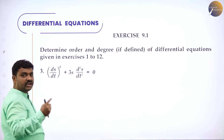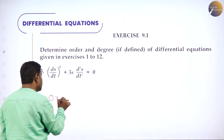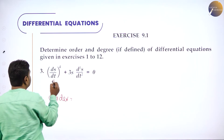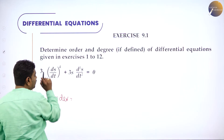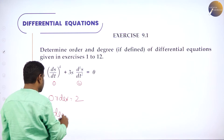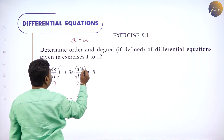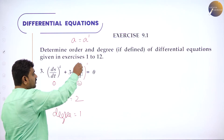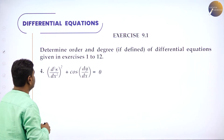Problem 3 involves ds/dt and d²s/dt². Between d and s: ds/dt is one time differentiated with power 4, and d²s/dt² is two times differentiated. Maximum is 2 times, so order is 2. Degree means overall power of the highest-order term. d²s/dt² has no explicit power, meaning power 1, so degree is 1.